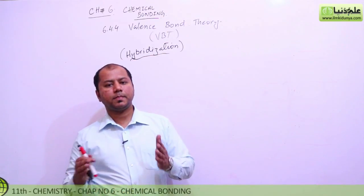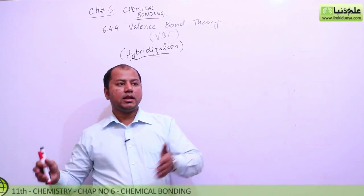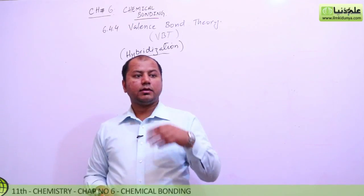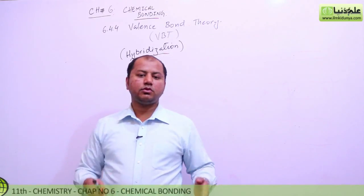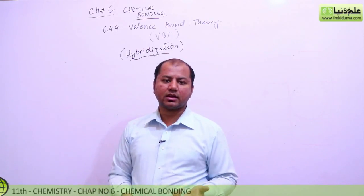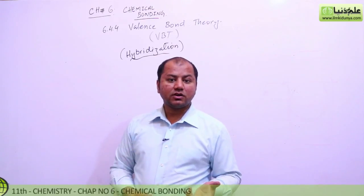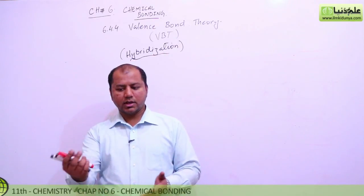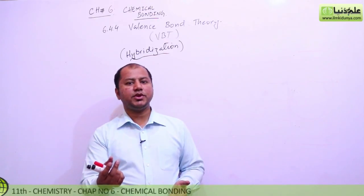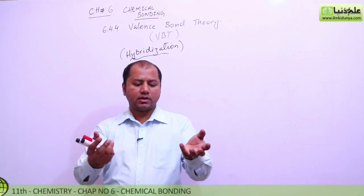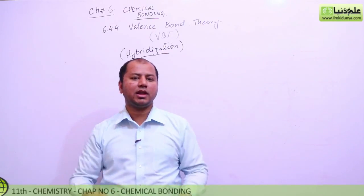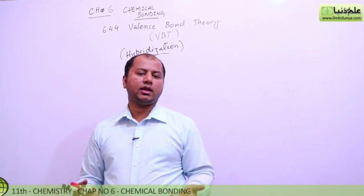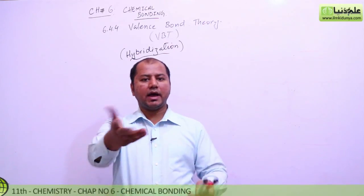When orbitals intermix, like mixing banana, apple, and mango in a juicer to make a shake - the shake doesn't taste like a single fruit but combines all three. Similarly, if I have a p orbital and an s orbital and mix them together, the geometry and shape won't be the same as either original. We get a new shape called sp hybrid, showing both s and p character.